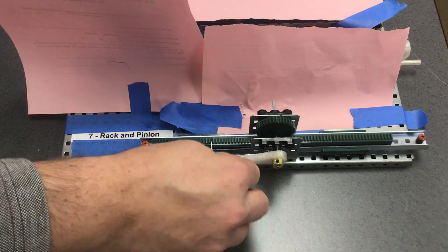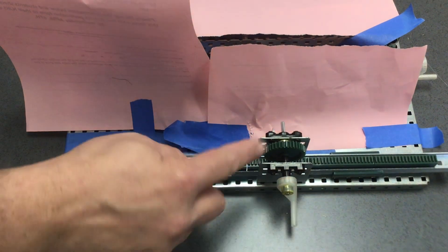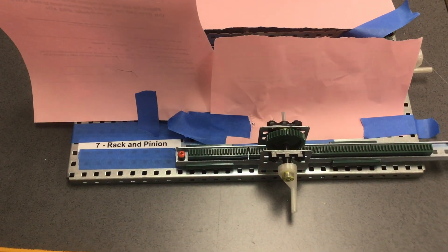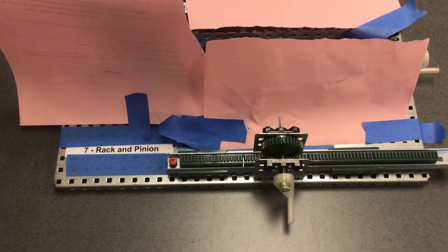The speed and torque on this particular mechanism is constant. This works like a one-to-one ratio. This is the rack and pinion mechanism.